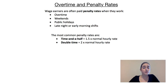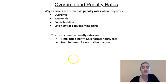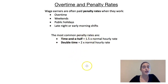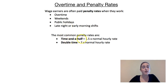The two most common types of penalty rates are time and a half and double time. Double time means you get paid twice as much per hour, and time and a half means you get paid one and a half times your normal hourly rate of pay. For example, if you work a two-hour shift and you're getting paid at time and a half, it's like you're being paid for three hours.